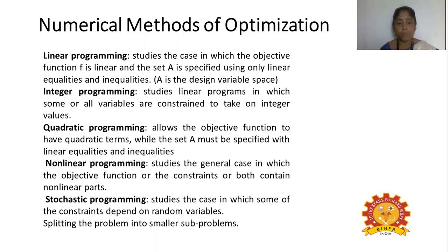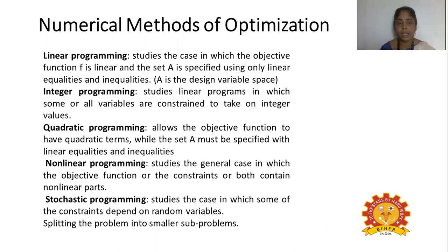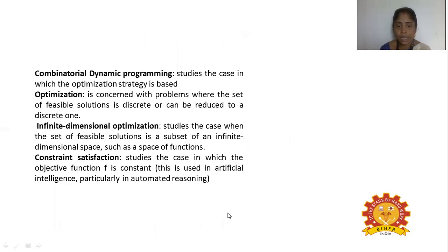Stochastic programming studies the case in which some constraints depend on random variables. For example, in a first experimental trial, one variable may affect the process, but in a repeated second trial, a different factor may affect product formation. This represents the stochastic nature — splitting problems into smaller sub-problems and solving them repeatedly.